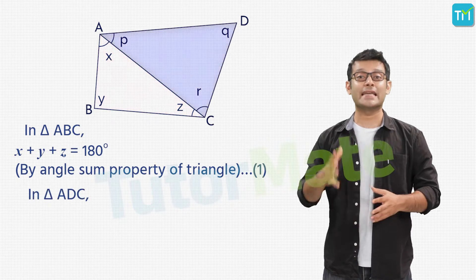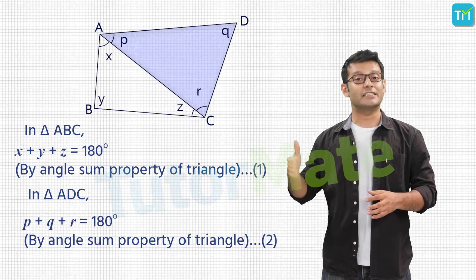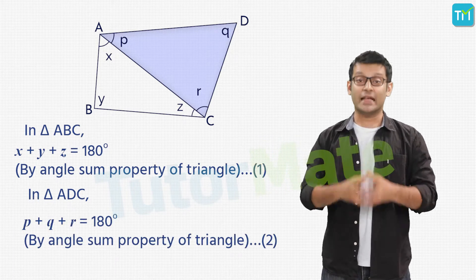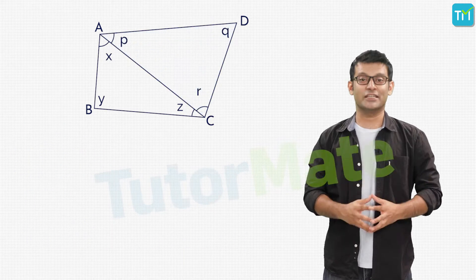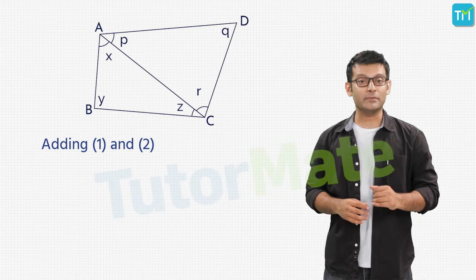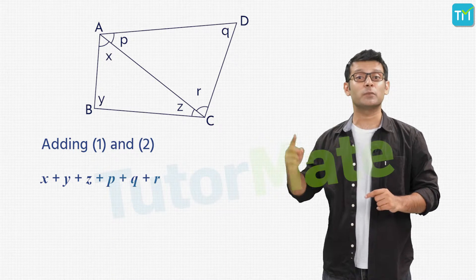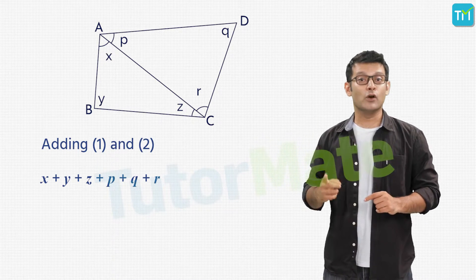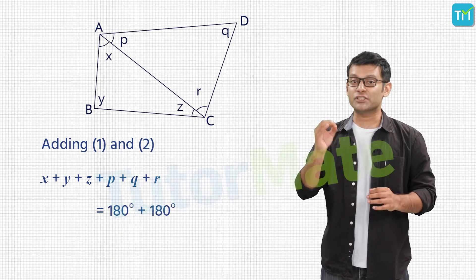Then we'll consider triangle ADC in which we will get P plus Q plus R is equal to 180 degrees. And that will be our equation number 2. Next we will add equations 1 and 2. By adding them, we'll get X plus Y plus Z plus P plus Q plus R on the left hand side. While on the right hand side, we will have 180 plus 180 which gives us 360.